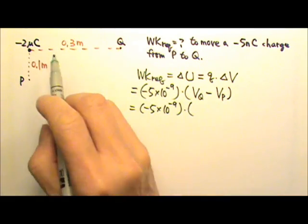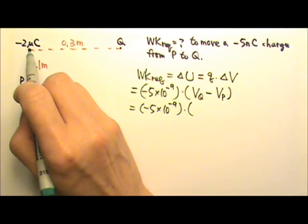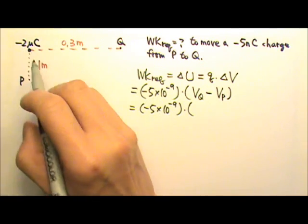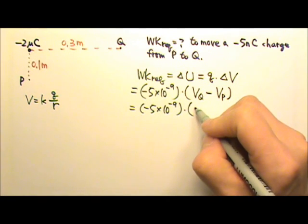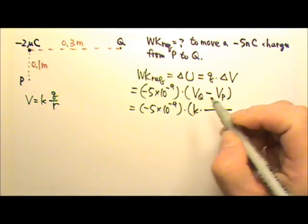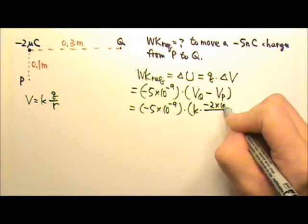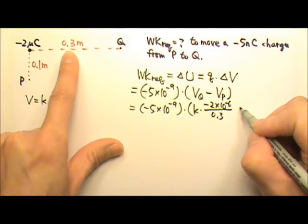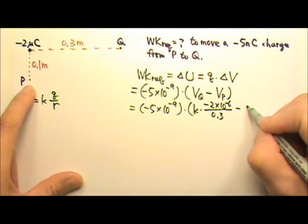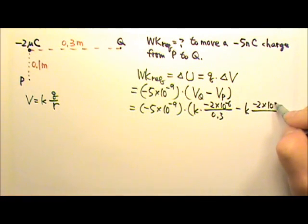So this will be negative 5 times 10 to the negative 9th. The potential at these two points are produced by this point charge. And to find the potential produced by a point charge, we use V equals to KQ over R. So this will be K times the charge that's producing electric potential is the negative 2 micro, and the distance at Q is 0.3. And then minus the potential at P, that's K times also negative 2 times 10 to the negative 6, and this distance is 0.1.